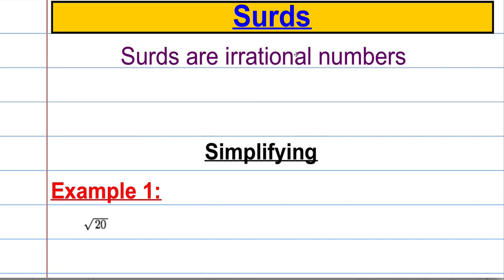First of all, surds are irrational numbers. Now if you're not sure what an irrational number is, it's a number that we cannot write exactly as a fraction. One of the most classic irrational numbers you may be aware of is pi — pi cannot be written exactly as a fraction. And some surds that can't be written as fractions would be things like root 2 and root 5, and there's an infinite amount of surds that we could find.